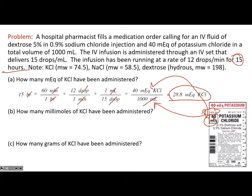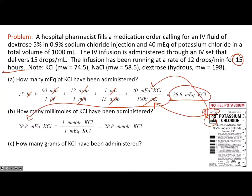That's a lot of steps, but with dimensional analysis — setting up your units before doing any math and making sure units cancel — it works out. Now, how many millimoles of potassium chloride were administered? We already know 28.8 milliequivalents. To convert milliequivalents back to millimoles, use the valence on potassium, which is one. So there is one milliequivalent per one millimole. Therefore we also administered 28.8 millimoles, because the valence on potassium is one.